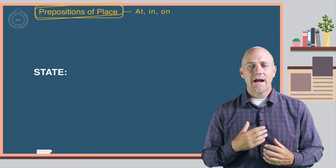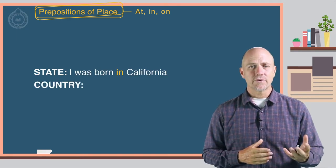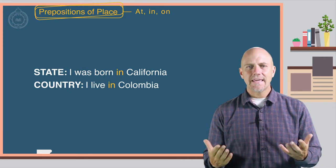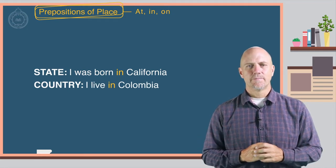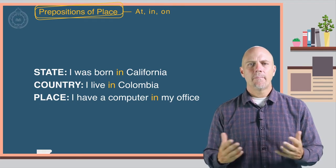Here are some examples. A state: I was born in California. Or a country: I live in Columbia. Or a place: I have a computer in my office.